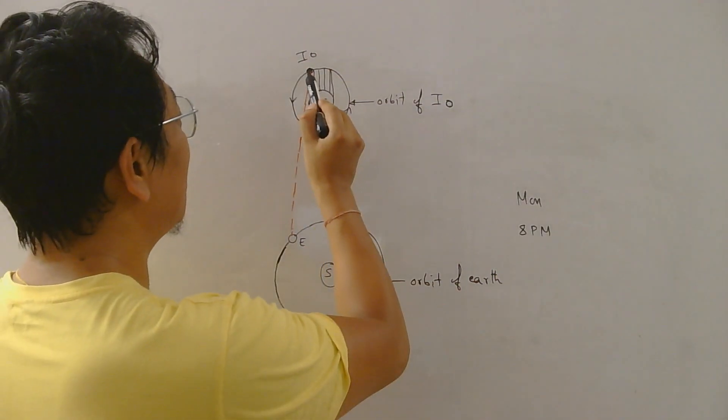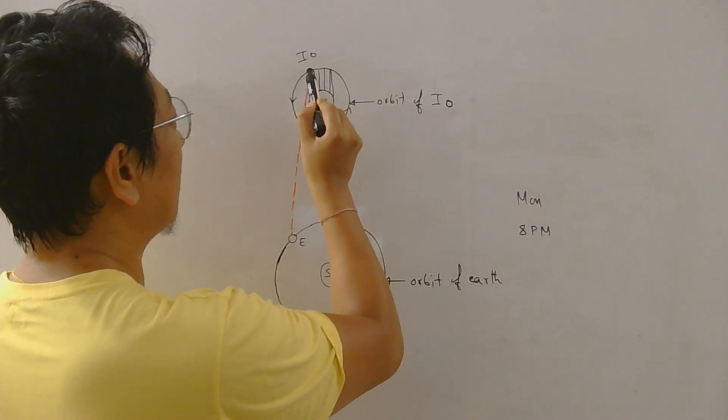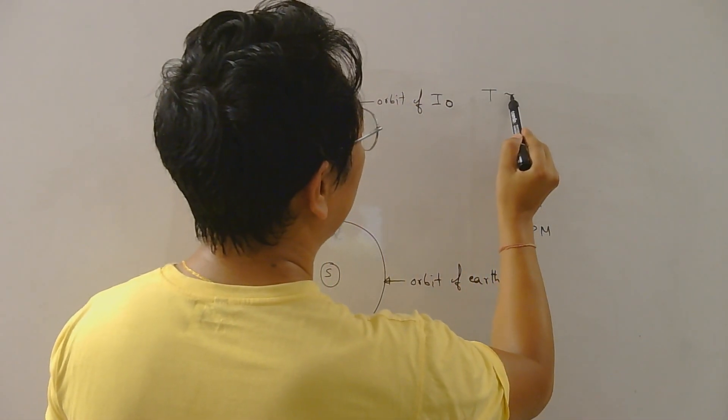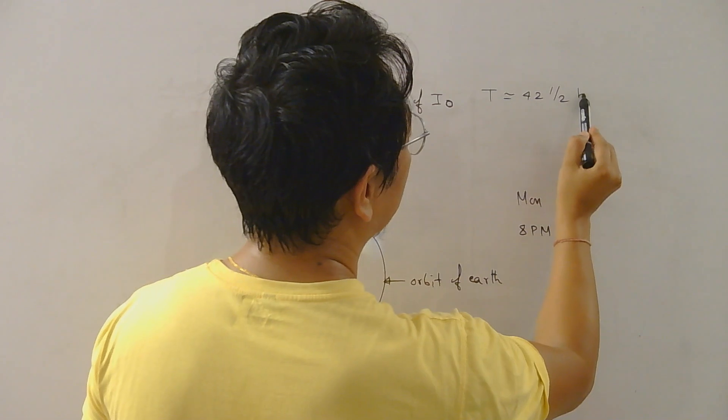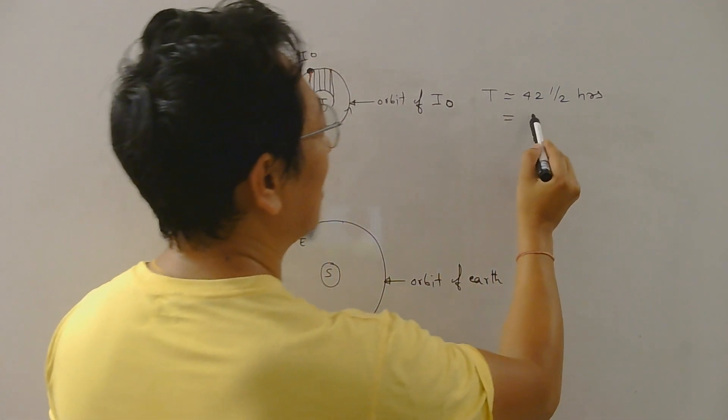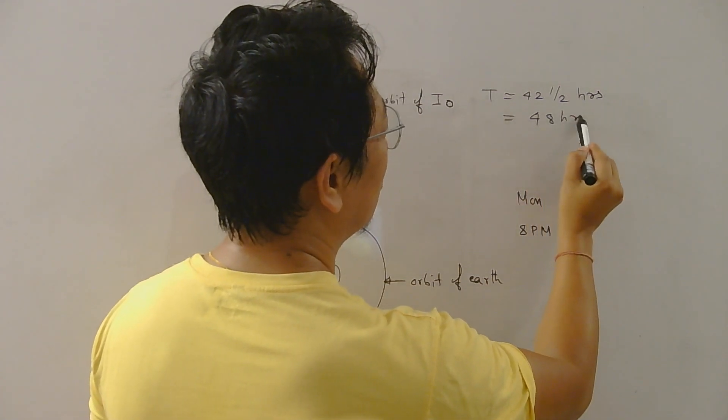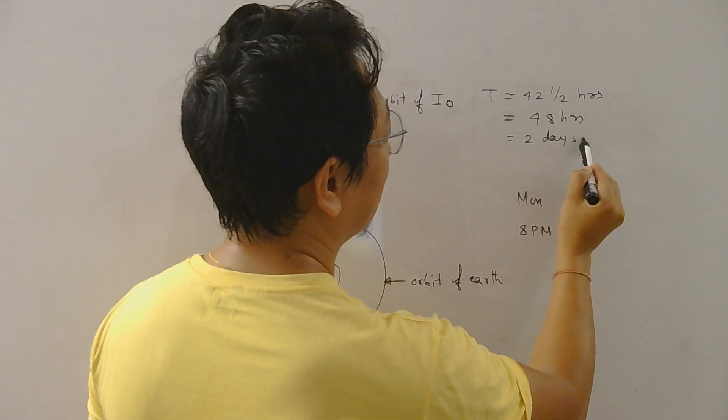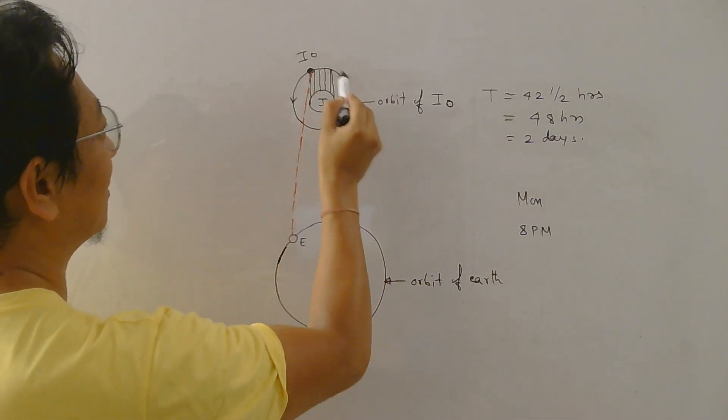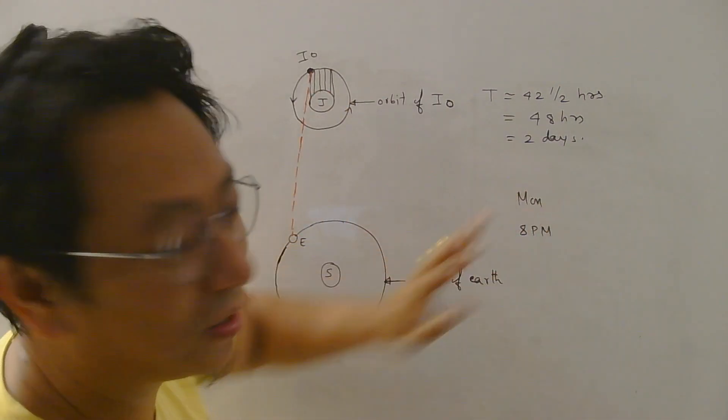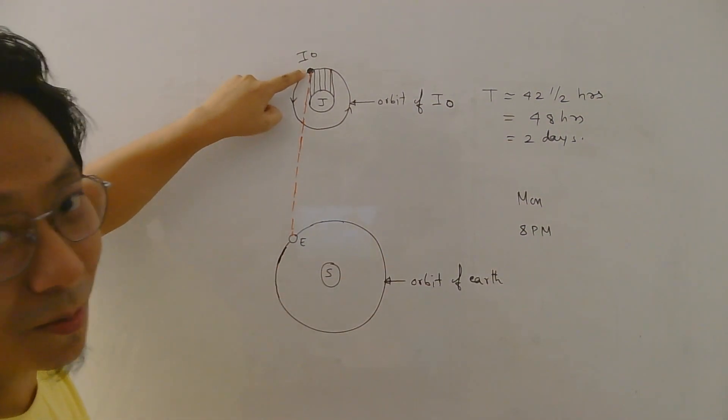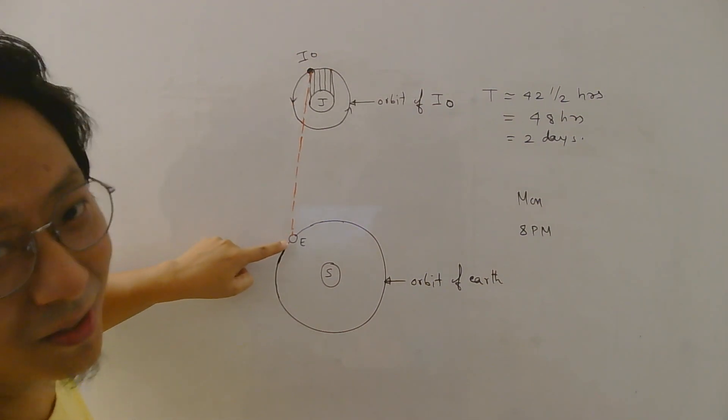Now the time period of Io, which is time taken by Io to complete one revolution, was known to be 42 and a half hours. But for the sake of simplicity I will take it as 48 hours which will be 2 days. So in 2 days time Io will be again back here starting from this moment. Remember this was the moment Monday 8 PM when you saw the moon rise here from Earth. Okay.